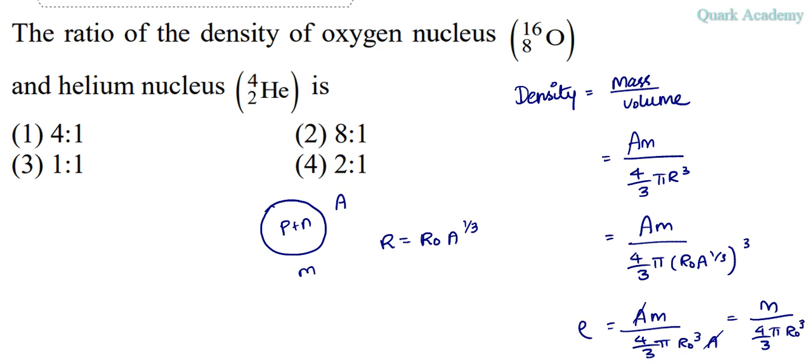So this is the density of the nucleus. If you have a look at this expression, here we have m which is a constant mass of proton or neutron, and 4 by 3 is constant, pi is constant, r0 is constant.